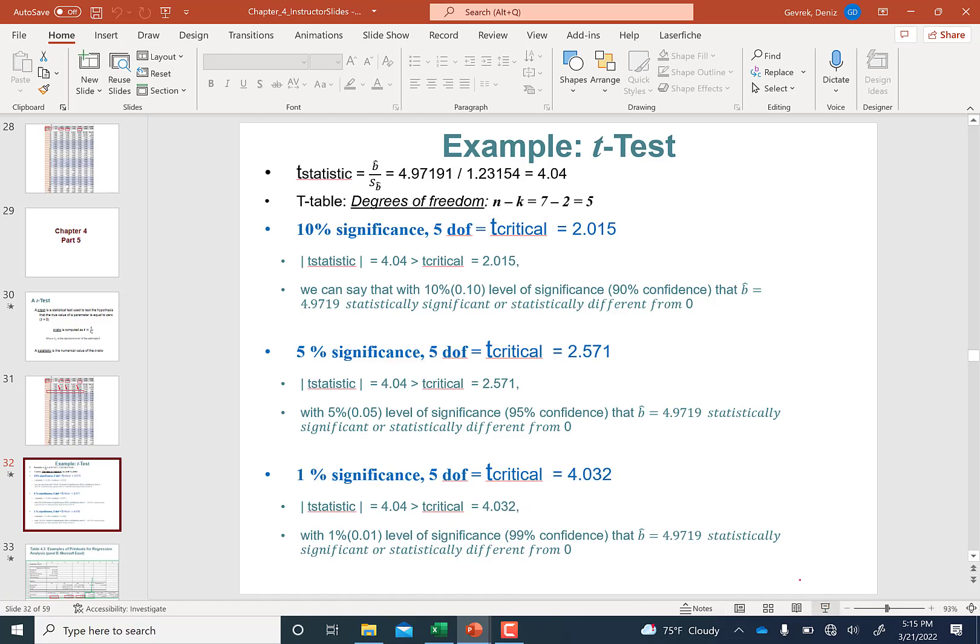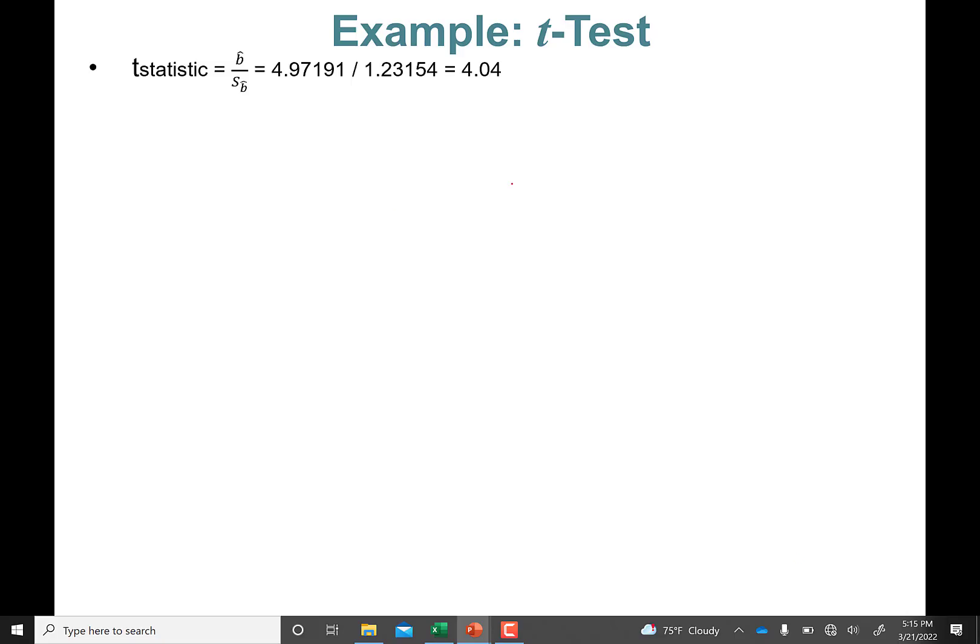So what we get is a t-statistic. The t-ratio is the formula, and the t-statistic is going to be the number 4.04. We are going to put this in absolute value; it's going to be itself, right? 4.04.